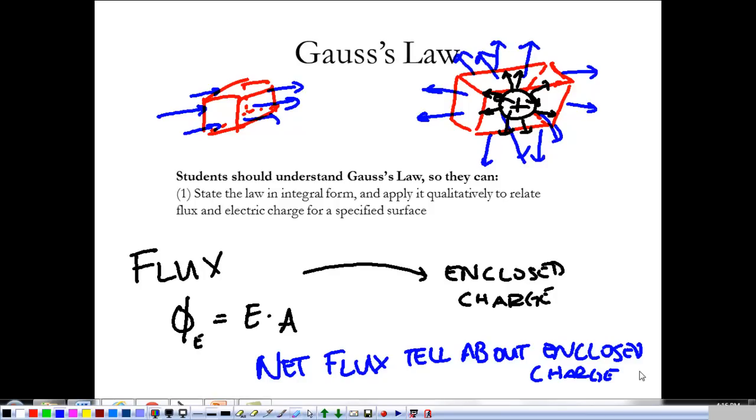If I add up that electric field passing through the surface, it's going to tell me about how much charge I have there. If I look similarly at an empty box, even though I can get field to pass into and out of the box, there's not going to be any net flux coming through that box. What we're saying with Gauss's law is that net flux from a surface tells me about enclosed charge.